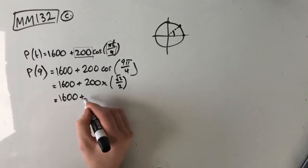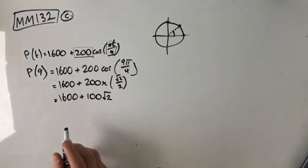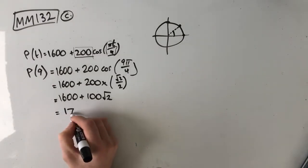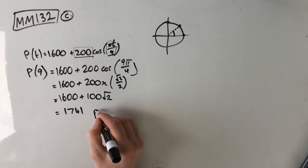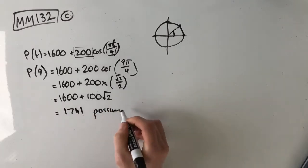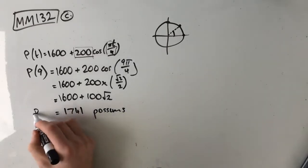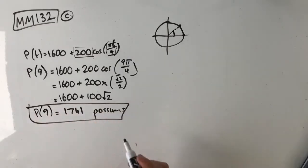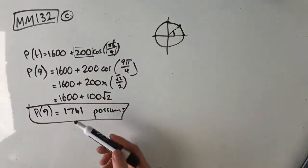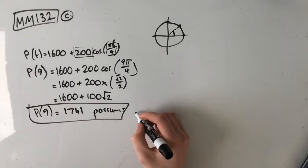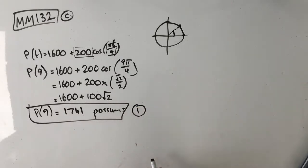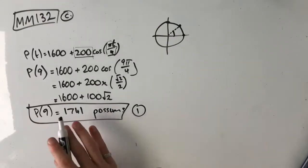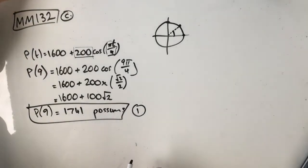This gives us 1600 plus 100 root 2, and we're looking for p of 9 to the nearest whole number. Putting this in our calculator, we get 1741 point something, but we want it to the nearest whole number, so we're saying 1741 possums, p(9) equals this. You can also just put this in your calculator and define p(t) equals this as a function, then just type in p(9) and it'll give you this. This is just a one-mark question. That's your first mark there. Please don't forget your units. In this case, the units is possums, just like we would never forget to write meters or meters squared. Possums is our unit, so don't forget to write that.